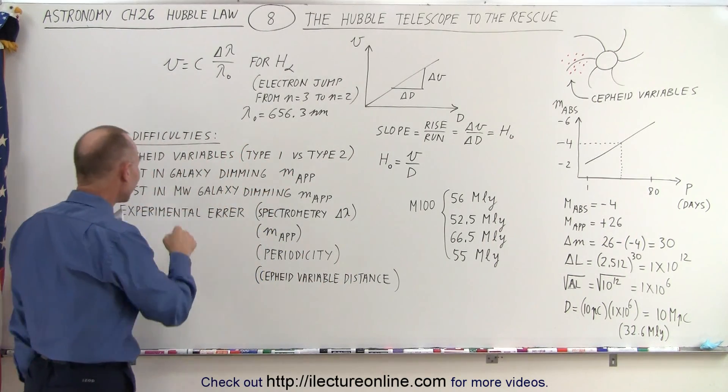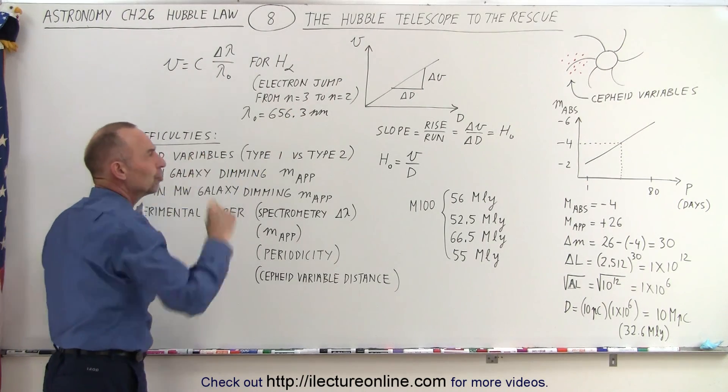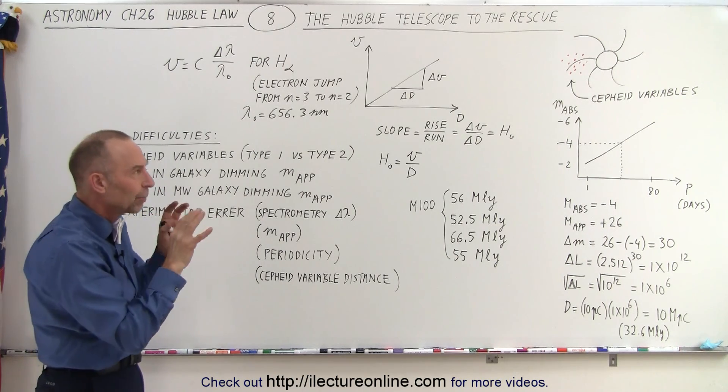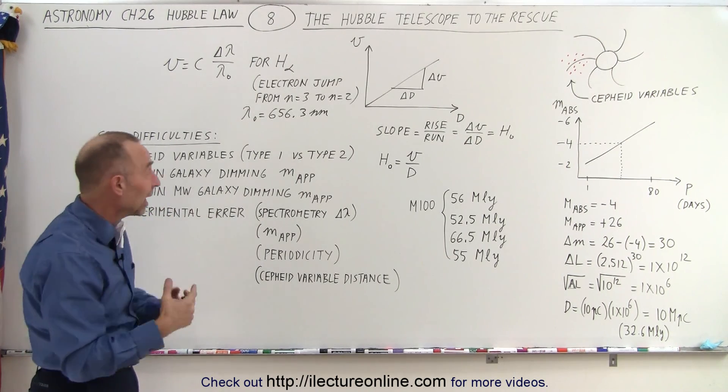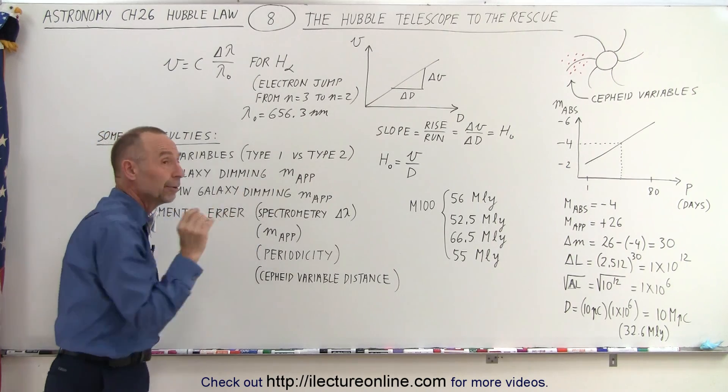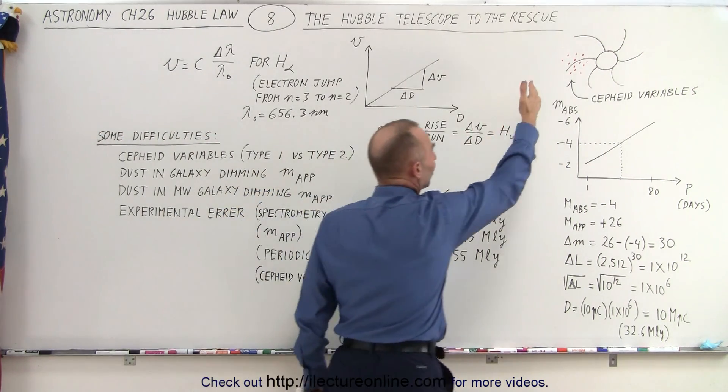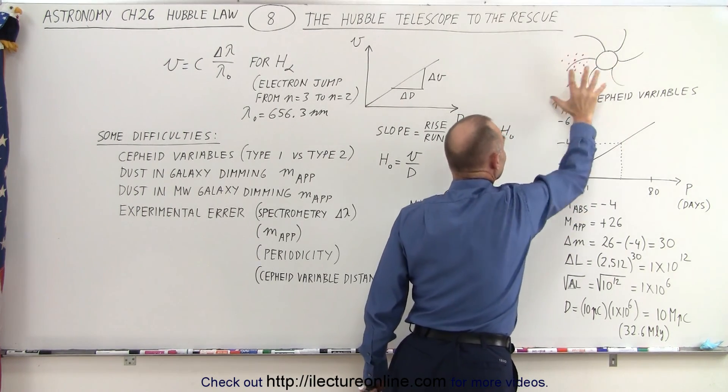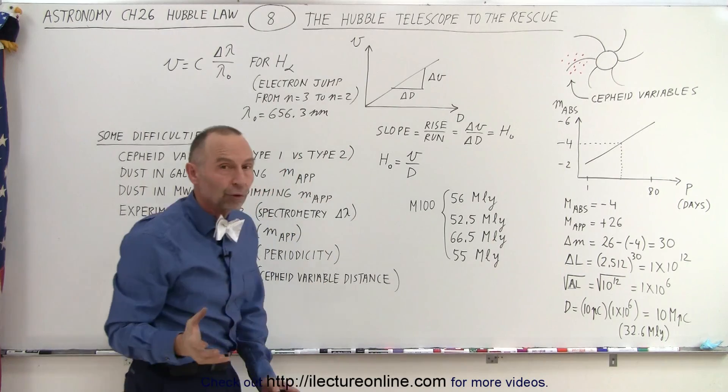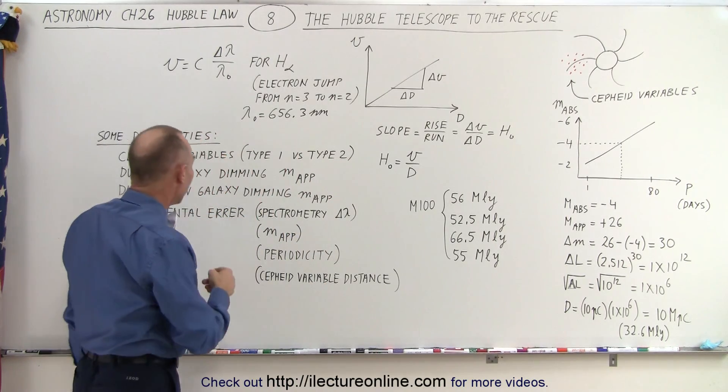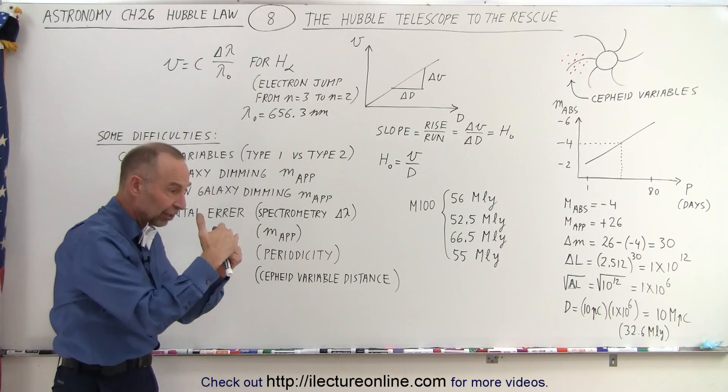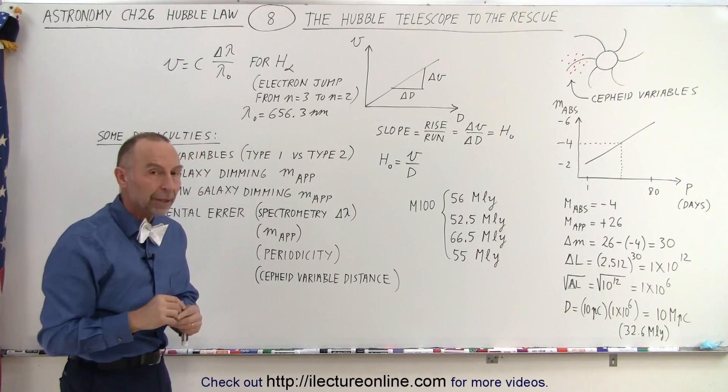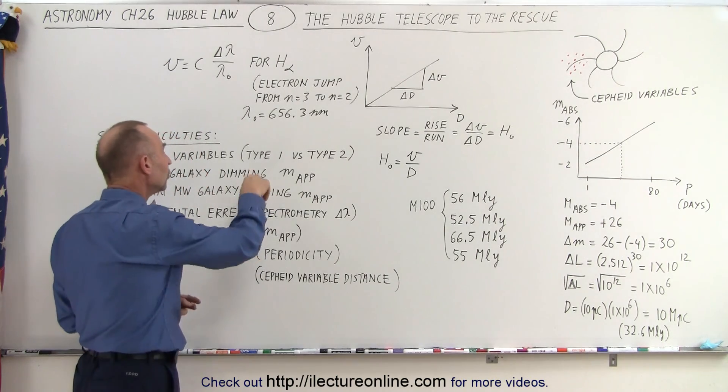Secondly, there's dust in the galaxy that you're looking at in the spiral arms, and that dust will interfere with the light. For example, there will be some reddening, some dimming of the light, and so you have to take that into account. So your apparent magnitude may be thrown off by the dust that's between the Cepheid variables and our line of sight in that galaxy. And then of course we're taking pictures from within our own galaxy and there may be some dust in our Milky Way galaxy between our telescope and where we're looking that also may interfere with our ability to measure the apparent magnitude.